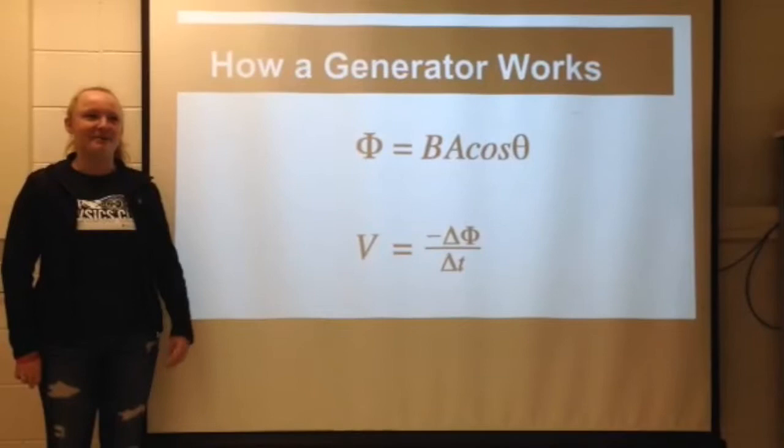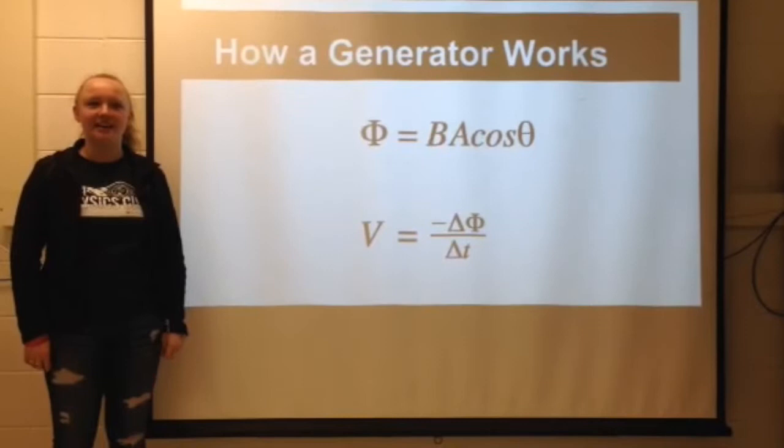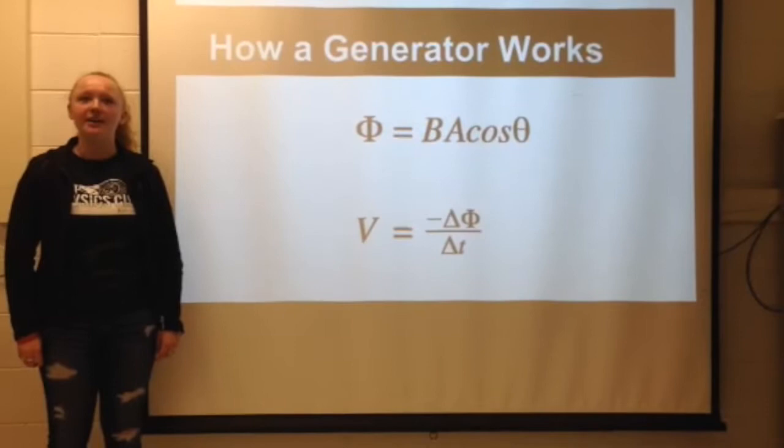This rotation changes the magnetic flux through the loop. Magnetic flux is calculated by B times A times cosine theta, where B is the strength of the magnetic field, A is the area inside the loop, and theta is the angle between the magnetic field and the area vector perpendicular to the loop.